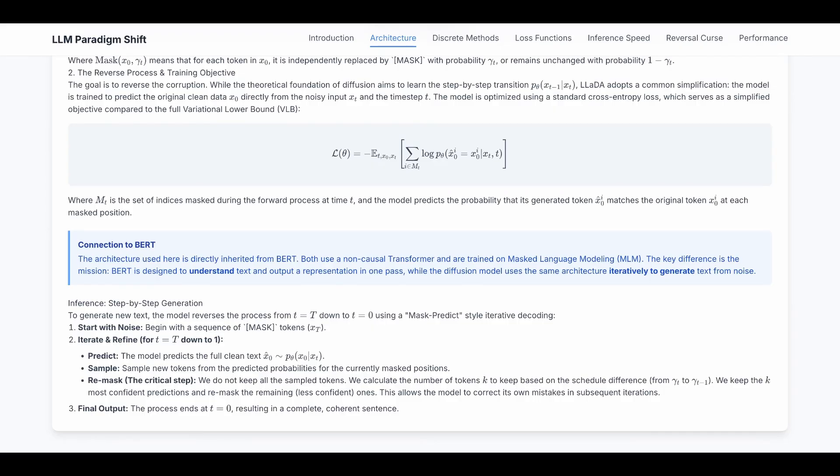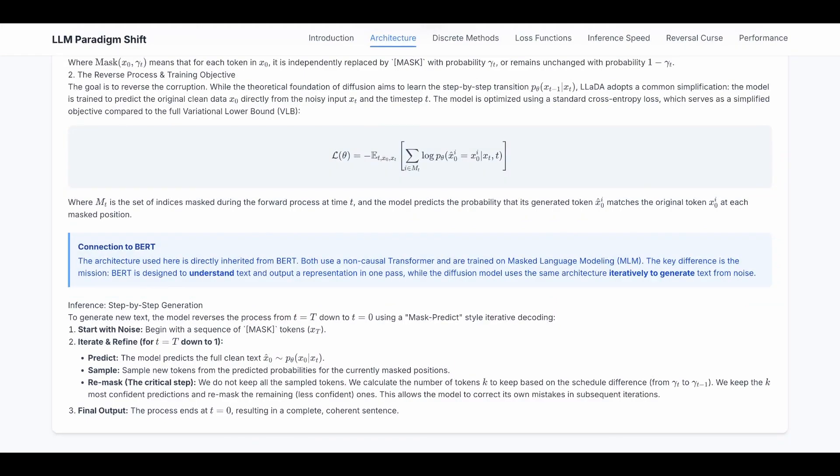Both use a non-causal transformer, that is the bi-directional transformer, and are trained on masked language model. The key difference is the mission. BERT is designed to understand text and output representation in one pass, while the diffusion model uses the same architecture iteratively to generate text from noise.